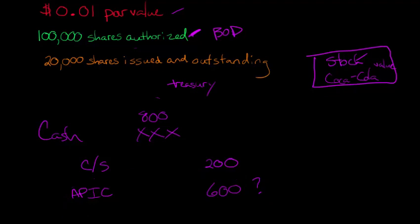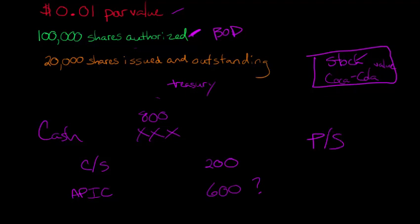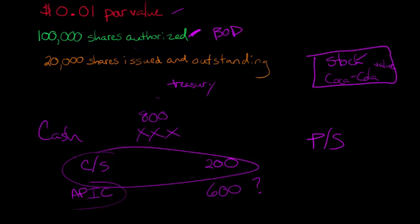That APIC is going to be a lot bigger than the common stock amount, typically, on the shareholders' equity section of the balance sheet, because the common stock is deliberately set low — it's just representing the par value. You'd do the same for preferred stock: debit cash and credit preferred stock plus APIC. In the next video, we're going to go through an actual example and calculate how you would do the journal entry in a case where you have significant additional paid-in capital.